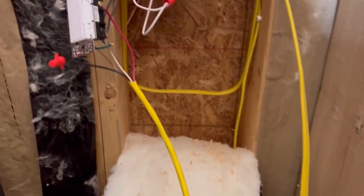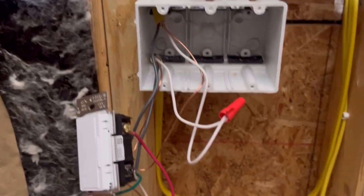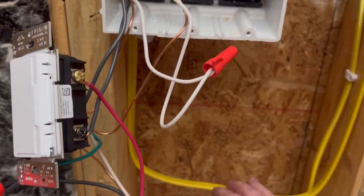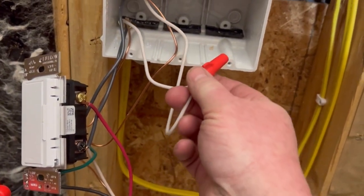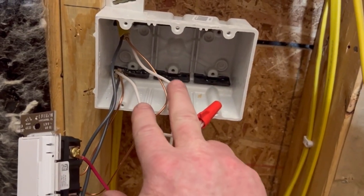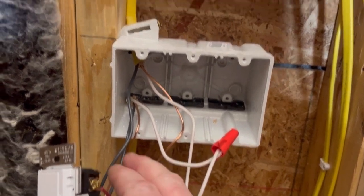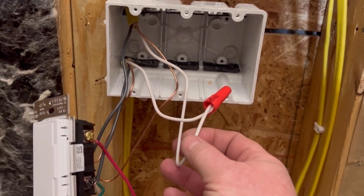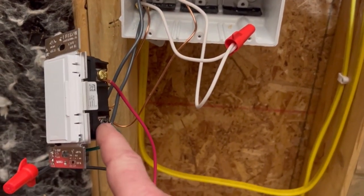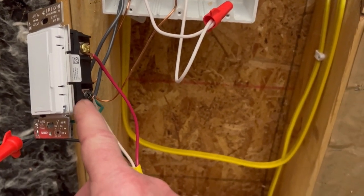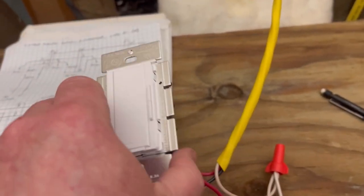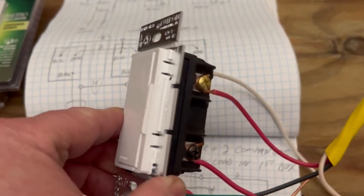So basically you just follow the diagram. Notice that this is my 12-2, this is my power coming in, and the neutrals get tied together. This is the power coming in, this is the 12-2 that goes up to the lights, so those neutrals get tied together. The power goes to the black screw.